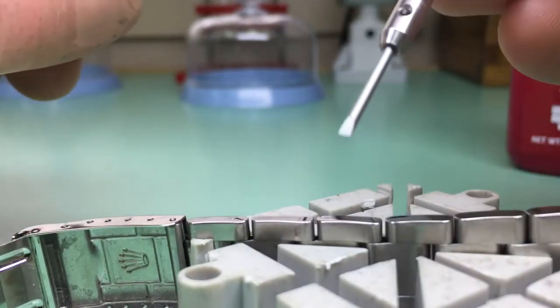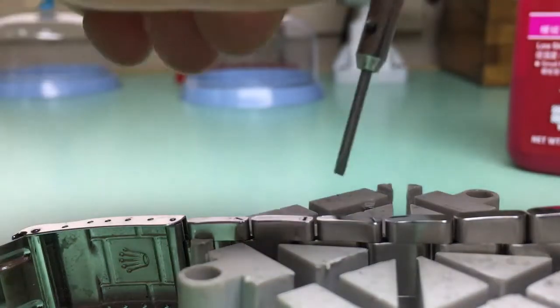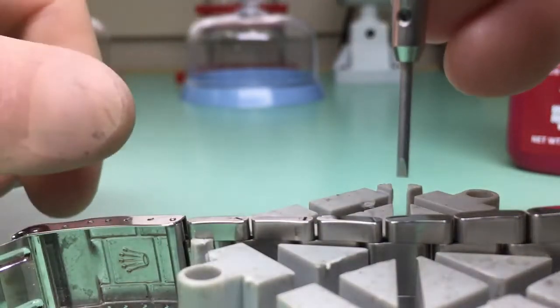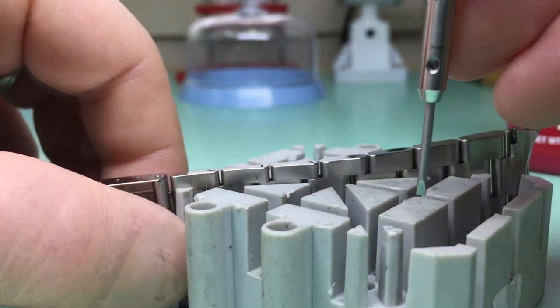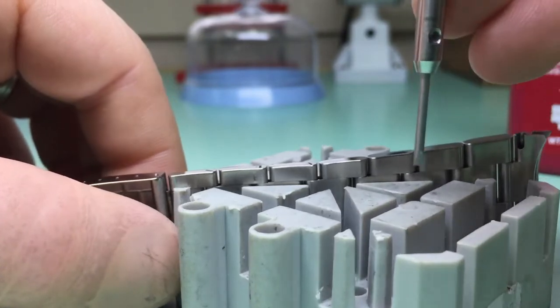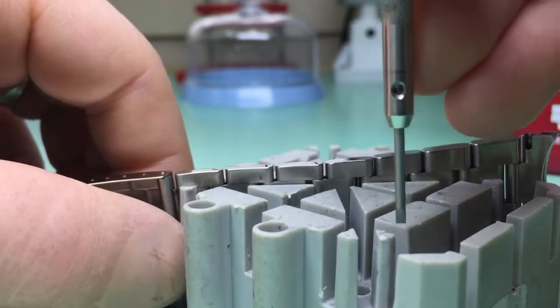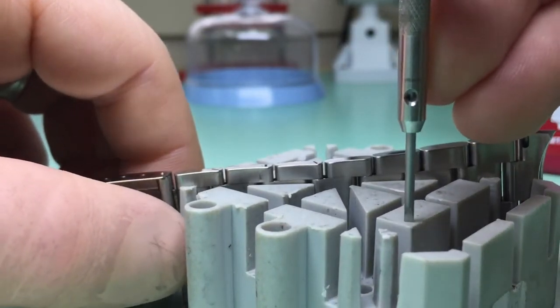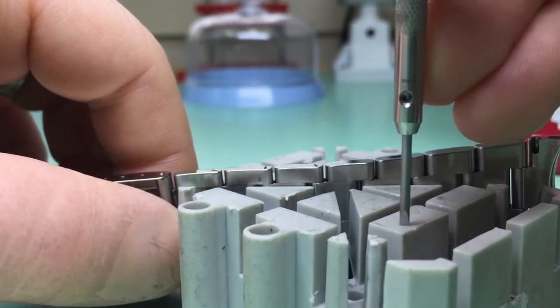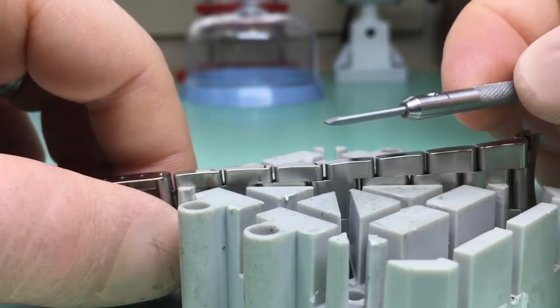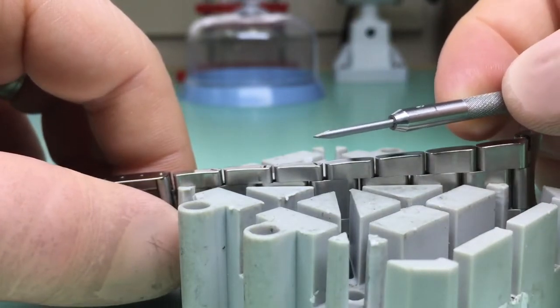When we want to correctly remove a bracelet screw, we want a correctly fitting screwdriver blade. So when I move back and forth, there's no movement. Now a stock standard blade out of the box is not going to fit perfectly. So we need to take a small bench stone, an India stone or diamond stone, and just go back and forth flat to shave the tip down so we have a nice snug fit and the correct width.